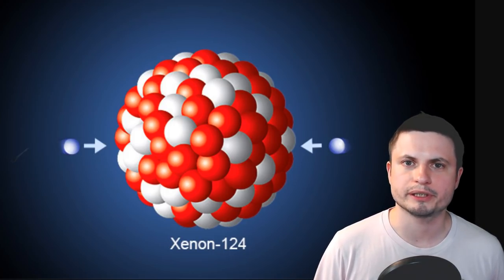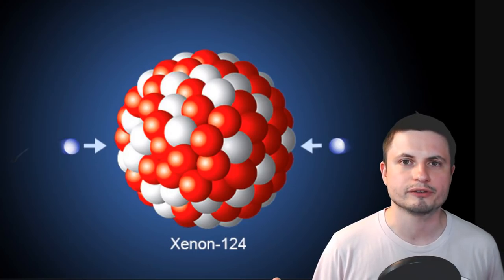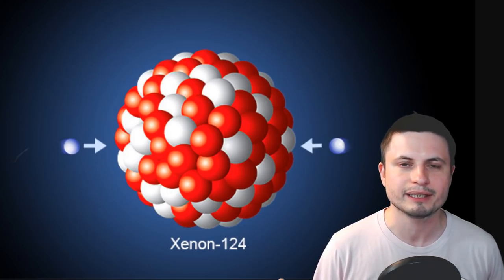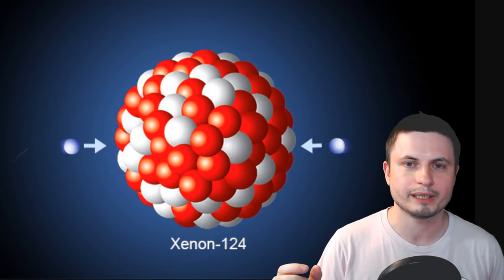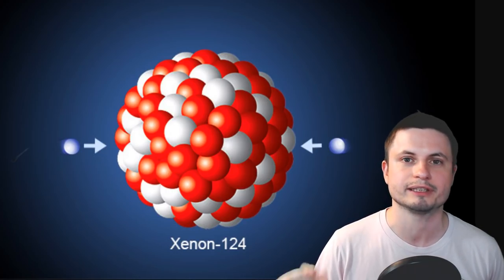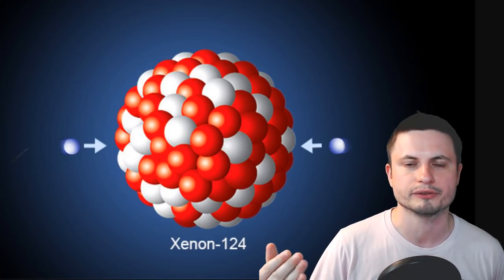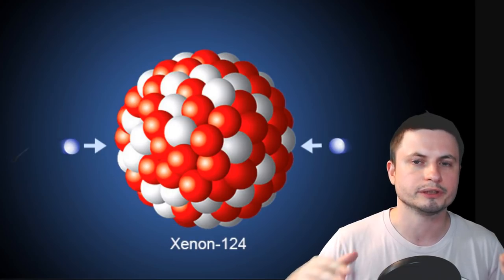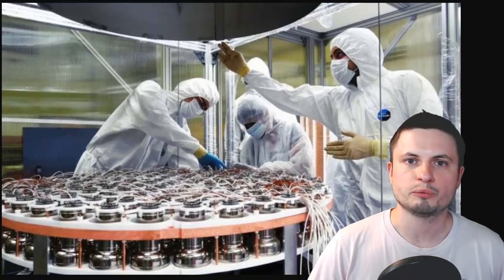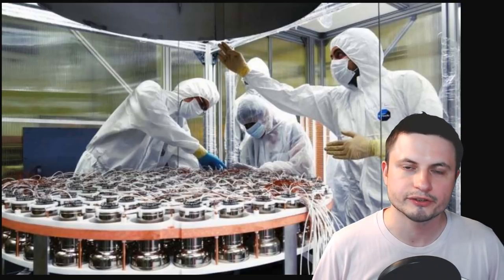But why are we even using this particular element? Well, think about it. So we're trying to detect something that's very difficult to detect, and we're using this isotope that's very stable, but still, it's an isotope. It can change into something else. So if you were to give it a little bit of a nudge, it would change into tellurium-124, produce some energy that we can hopefully detect using these sensors.